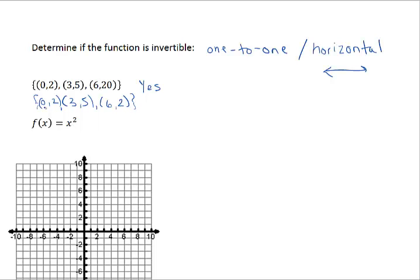In this particular example, since I have two x values and they each have the same y value, this would have been no. It would have been no because it's not one-to-one.